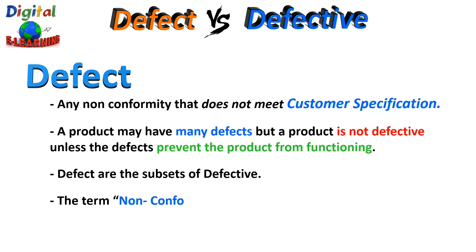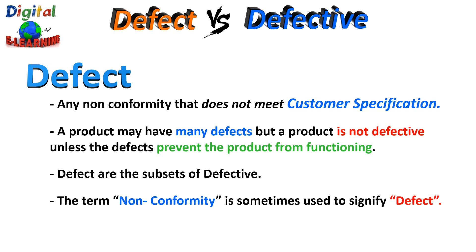The term non-conformity is sometimes used to signify defects. For example, if you go to a restaurant and evaluate its service, and the waiter greets you after 5 minutes, the customer can still order and enjoy a meal even though the greeting time does not meet expectations. Therefore, this could be considered as a defect of late greeting the customer in service.